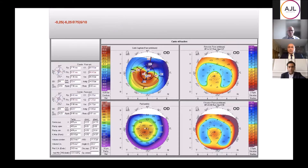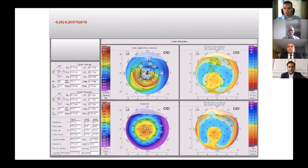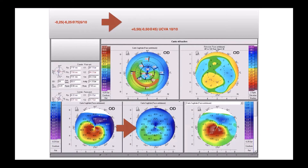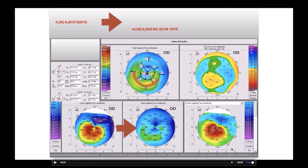This is a crescent shape with only one intracorneal ring and minus six of astigmatism. Four months later, you see the difference. Here you can see the differential map with the flattening shape, which is very important, and we see that it's very symmetrical.